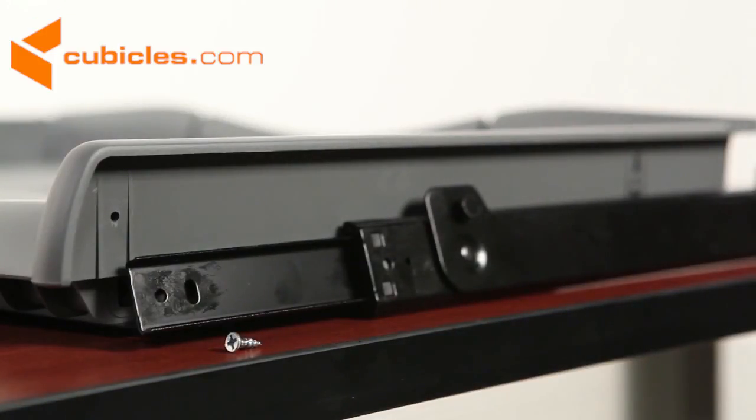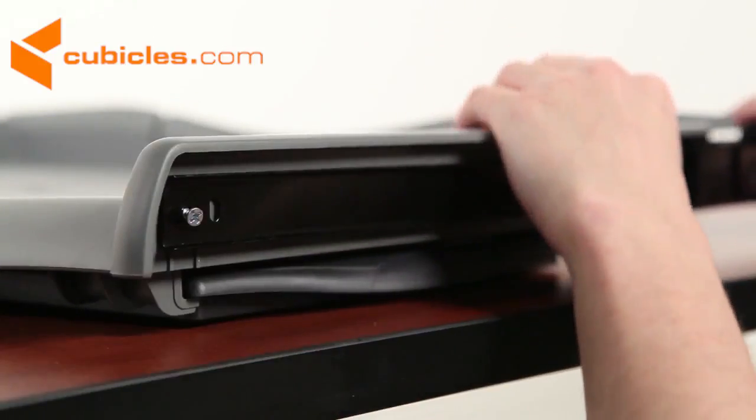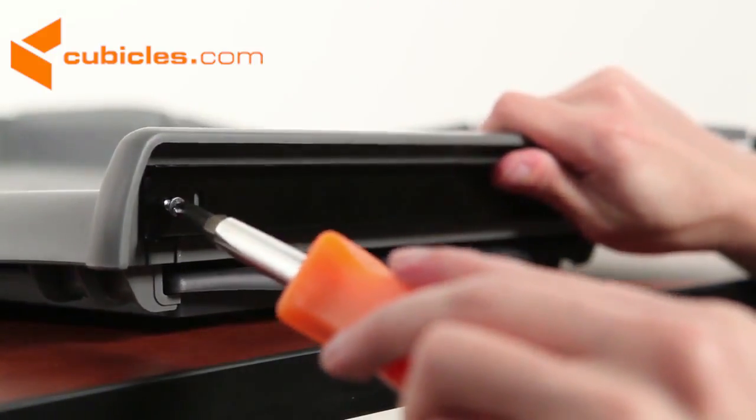First attach the sliders to the keyboard tray. Extend the slider to reveal the holes. We will use the small flat screws to attach the slider. Repeat for the opposite side.